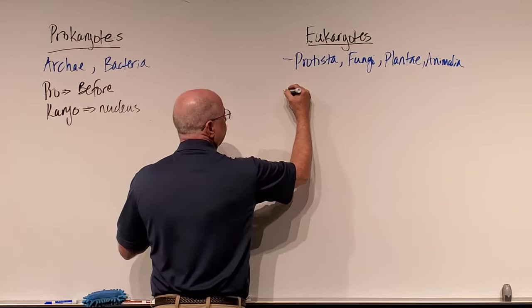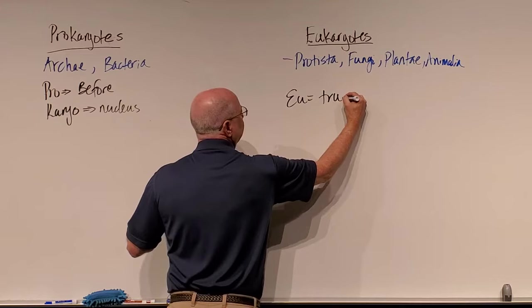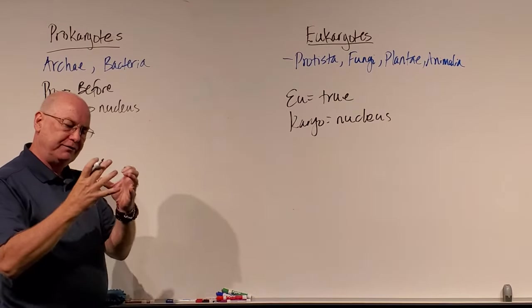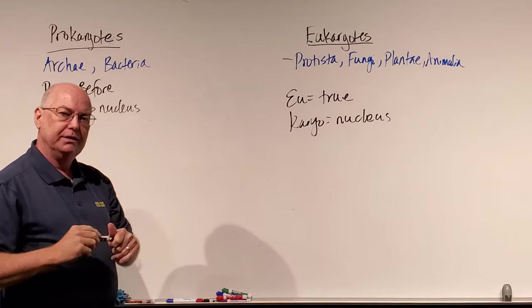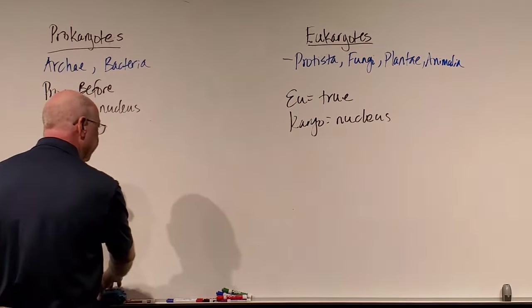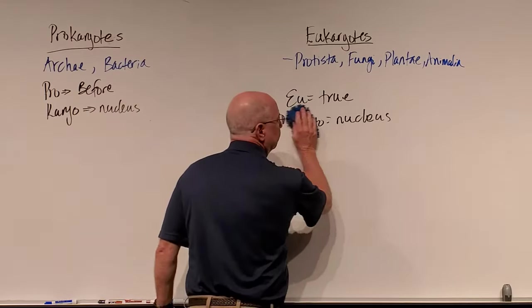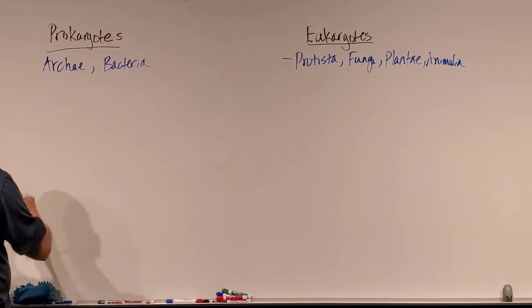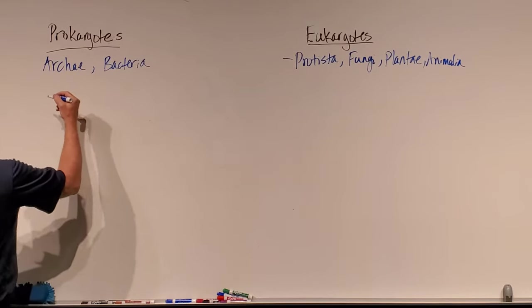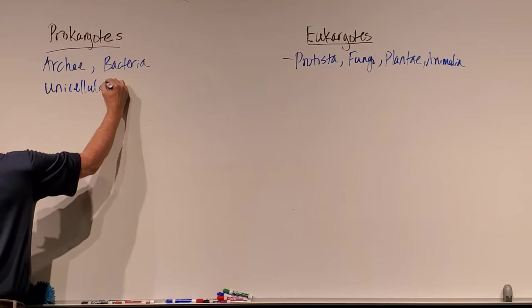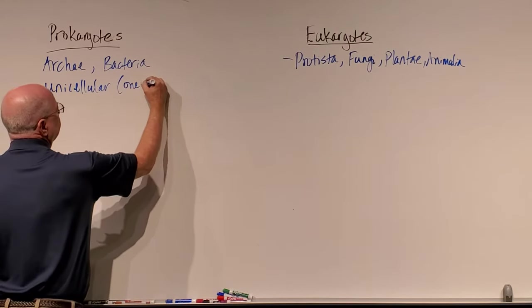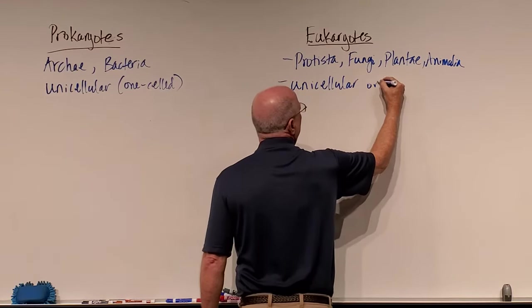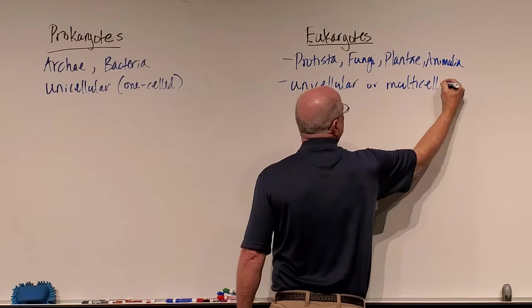For the term eukaryote, 'eu' means true, and 'karyo' refers to the nucleus. These cells have a true nucleus, meaning their DNA is enclosed in a membrane — a phospholipid bilayer, or lipid bilayer — called the nuclear envelope. Another difference: prokaryotes are unicellular, meaning one-celled organisms, where eukaryotes can be unicellular or multicellular, meaning many cells.